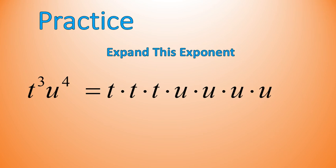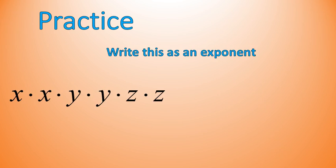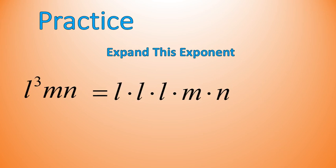Let's try another one with expanded form: l to the power of 3, m, n. Go ahead and write that in expanded form. The answer is l times l times l times m times n. Usually you don't use the letter l for a variable unless you're talking about length, because it looks an awful lot like the number 1, but we did anyway.